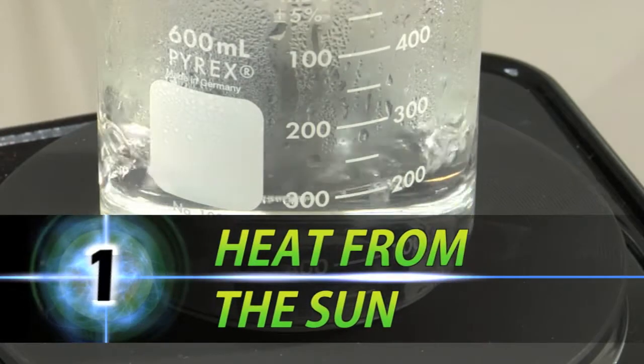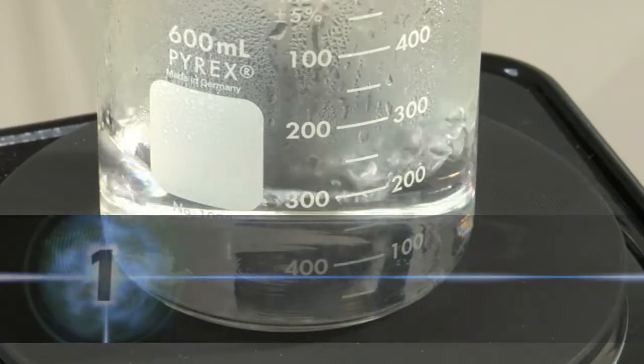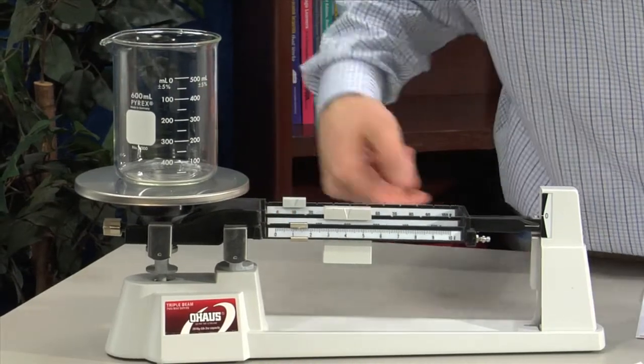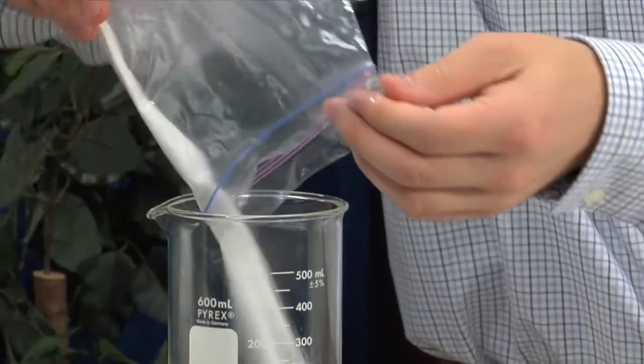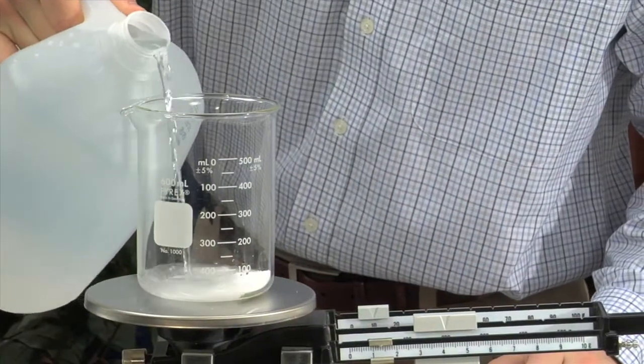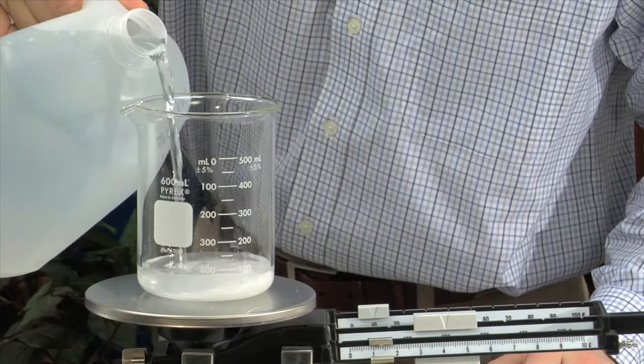Simulating Heat from the Sun. First, measure the mass of an empty glass beaker. Then add 20 grams of salt. Fill the beaker with 200 milliliters of water and stir to dissolve.